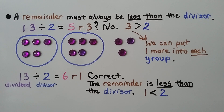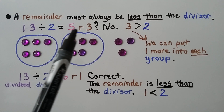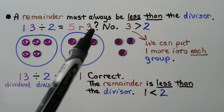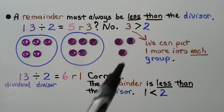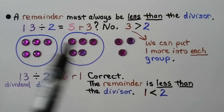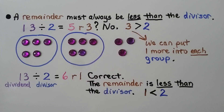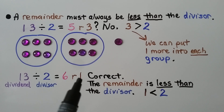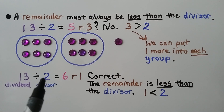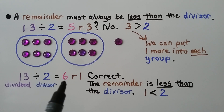A remainder must always be less than the divisor. For 13 divided by 2, the answer was written as 5 remainder 3 — but the remainder must be less than the divisor. 3 is greater than 2, which means we can put one more into each group. We have 13 counters in all; if we split them into two groups, we can put one more into each group. 13 divided by 2 is equal to 6 in each group with remainder 1. The remainder 1 is less than the divisor 2. If you get a remainder greater than your divisor, your quotient should have been a little bigger.